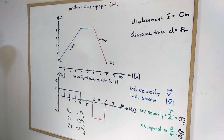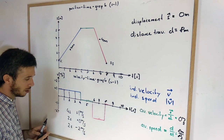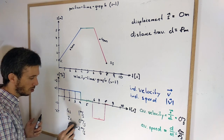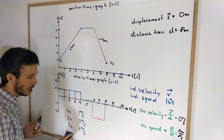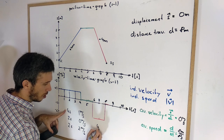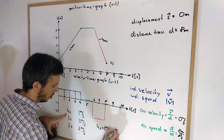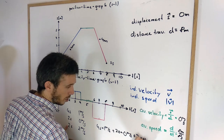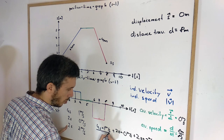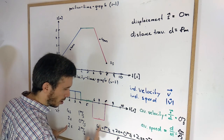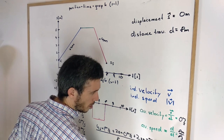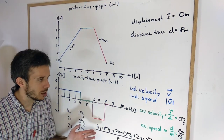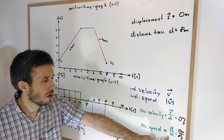We can also verify average speed using the weighted average. For the first 4 seconds we had 1 meter per second, then for 2 seconds we had 0, and for the last 2 seconds we were traveling at 2 meters per second. So: 4 seconds × 1 m/s + 2 seconds × 0 m/s + 2 seconds × 2 m/s over 8 seconds gives 4 + 0 + 4 = 8 meters over 8 seconds, which is 1 meter per second — the same result. So you can use the weighted average or the shortcut formula: distance traveled over time for speed, and displacement over time for velocity.